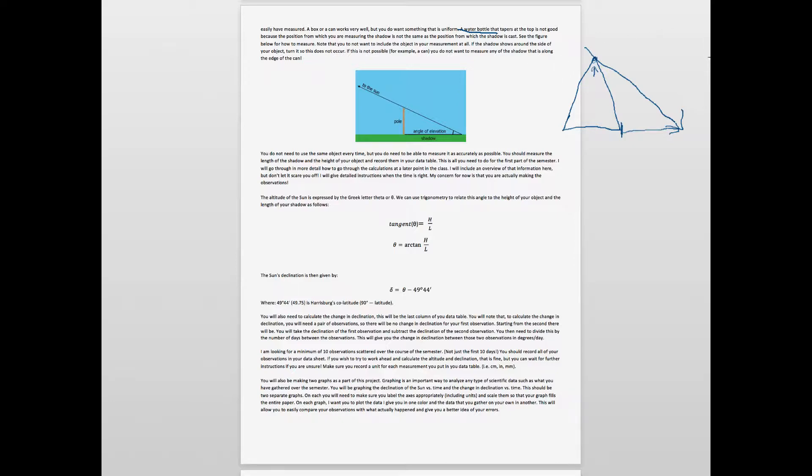You also do not want to include the object in your measurement. When measuring, you want to measure from the end here as I've shown. You don't want to include the rest of the object. You don't want to measure this portion as well because that would be overestimating the length of your shadow. Either one of those will cause a systematic error in your observations. So as shown in the image here, here's a pole standing up. The pole casts a shadow that we measure down here. You're going to measure how high this pole is and how long the shadow is. That's all you need to be able to do.